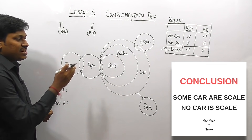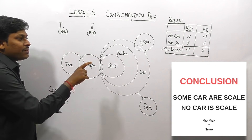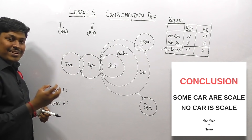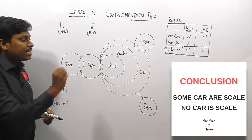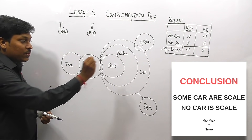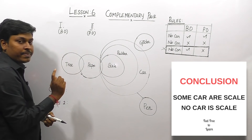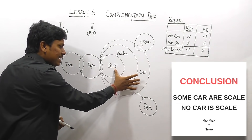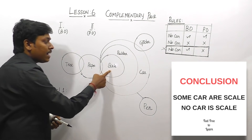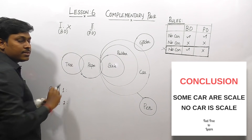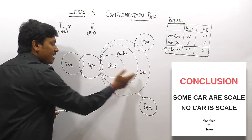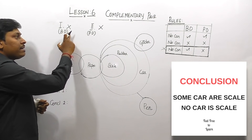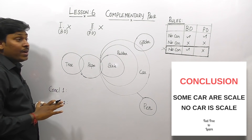Question number five: conclusion one is 'Some car or scale' and conclusion two is 'No car is scale'. The conclusion looks like a complementary pair, so our target is to check the 'No' conclusion. But in the basic diagram itself, there is a connection between car and scale, so 'No car is scale' is false in the basic diagram — and definitely false in the possible diagram too.